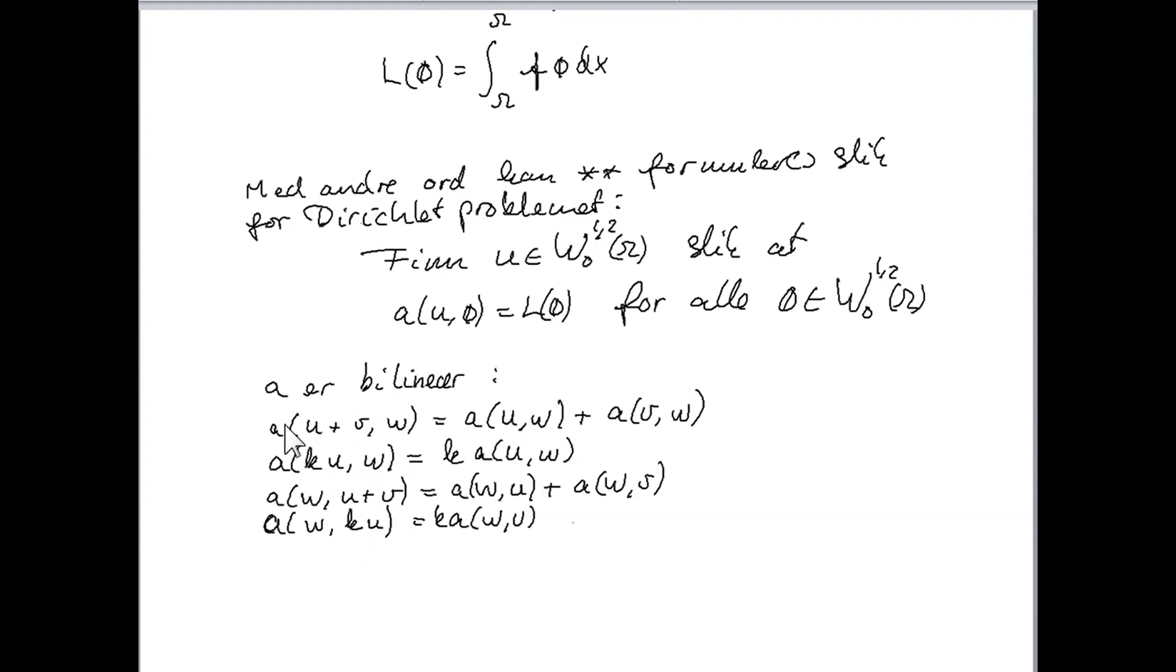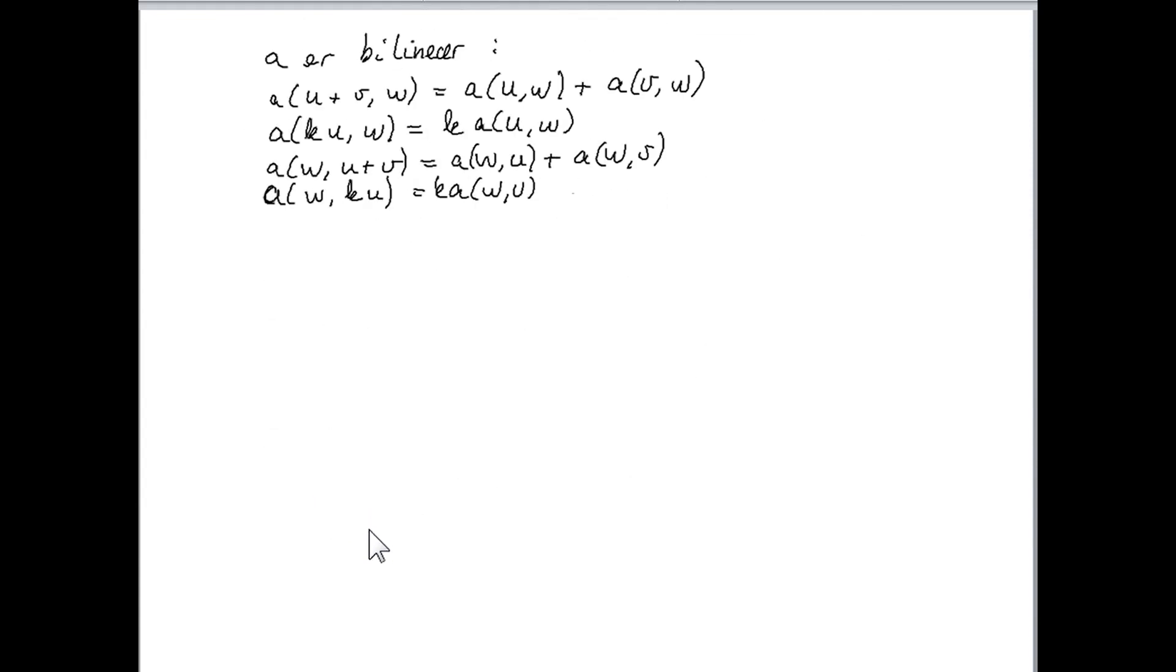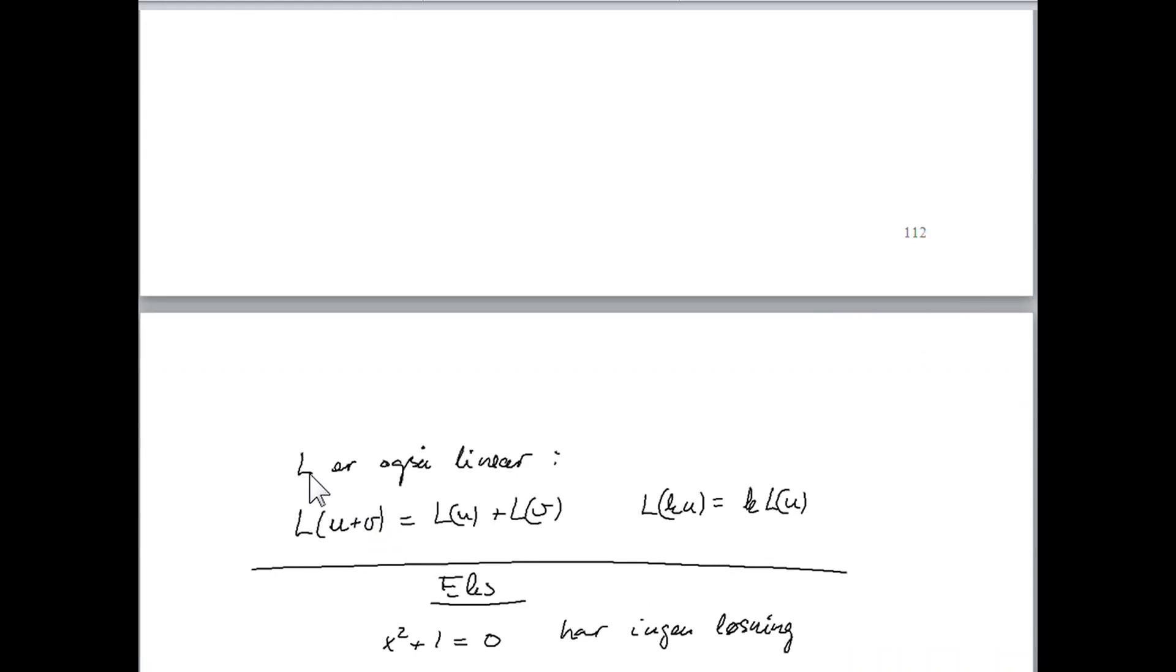That's exactly what we wrote here, just that we have put it in the second argument instead. And we have this property of this functional l, that l is also linear. So that l(u + v) is equal to l(u) plus l(v). And if we have l of some constant k multiplied with the function u, then we can bring this constant out of the function, like this.